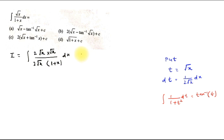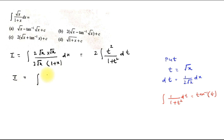Here we put √x equal to t. We see that dx/(2√x) equals dt, so this integration becomes t² (since √x = t means x = t²) divided by (1 + t²), and this is times 2 dt. So the integral transforms to 2 times the integral of t²/(1 + t²) dt.